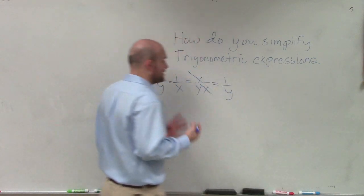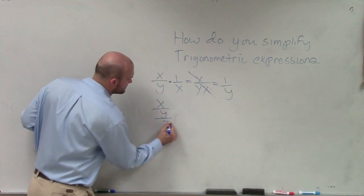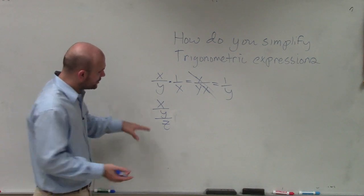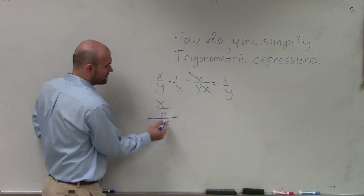This also comes up when we have maybe complex. So let's say if I had x divided by y divided by z. A lot of times what we want to do for this one is again look for our reciprocals. So if I have x divided by y divided by z, I can multiply this by 1 over z.